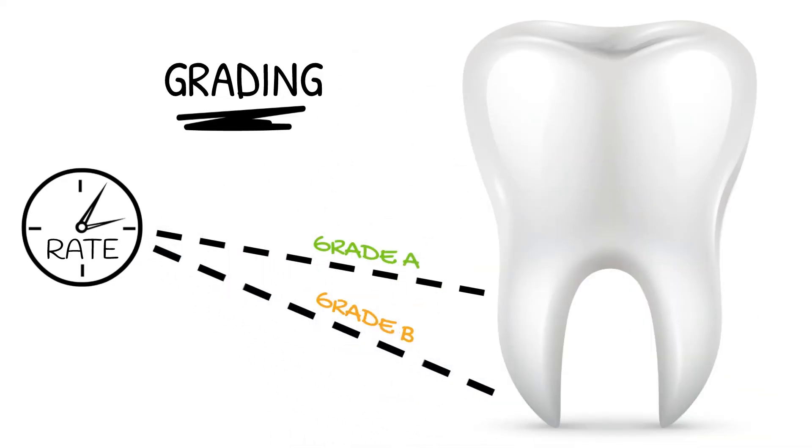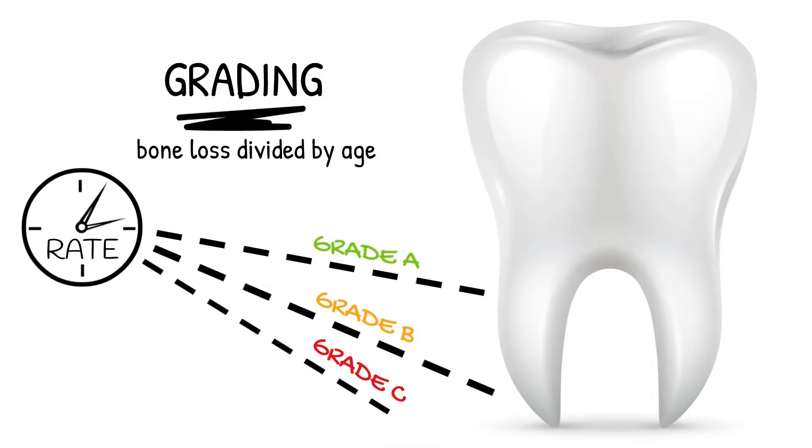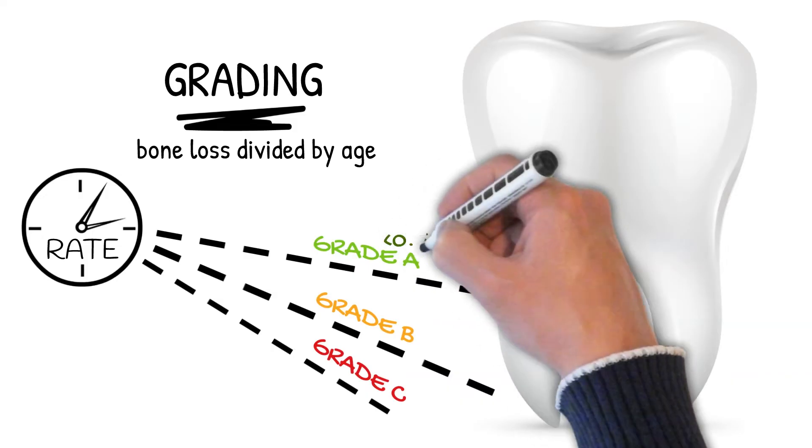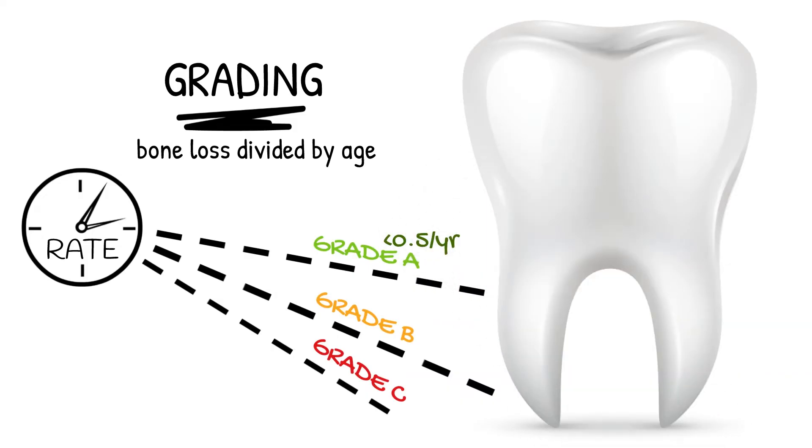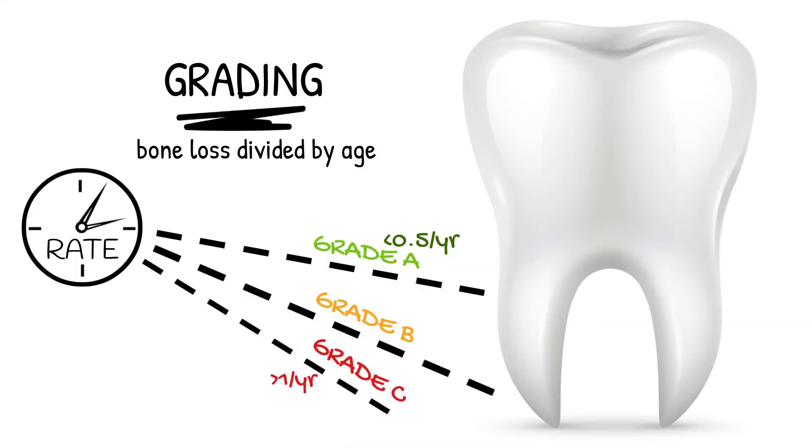This can be calculated using a simple calculation where the percentage of bone loss is divided by the patient's age. To make it easy, you only need to remember the extremes of bone loss. So if the percentage bone loss is less than half the patient's age, it is grade A. If the percentage bone loss is greater than the patient's age, it is grade C. Everything else in between is grade B.